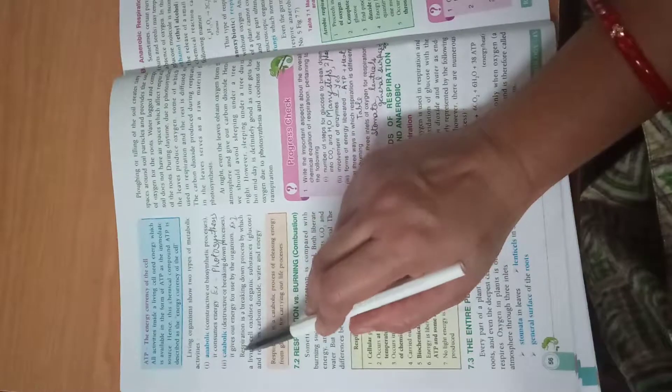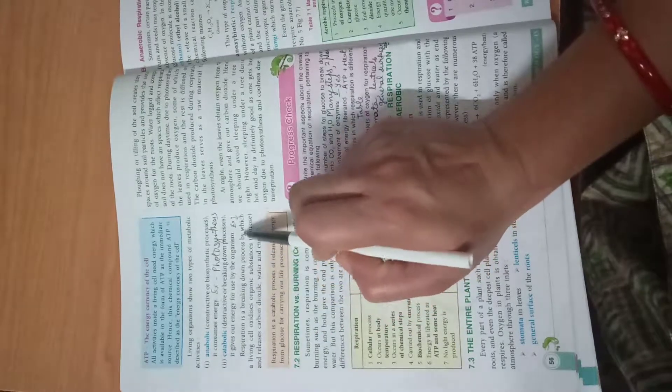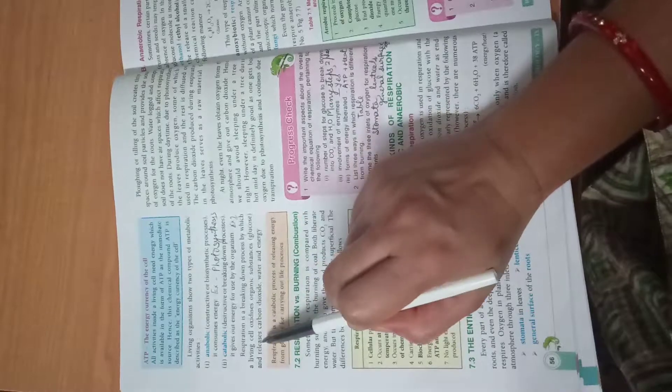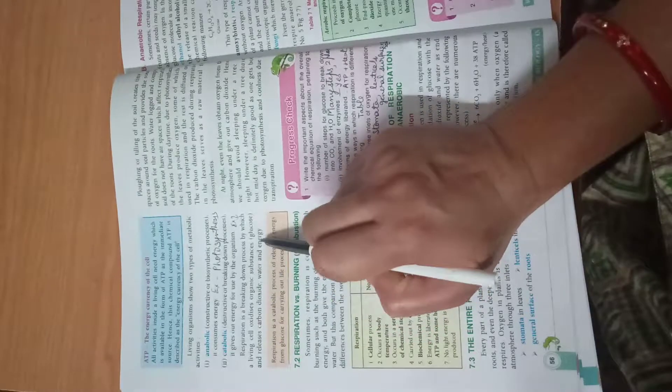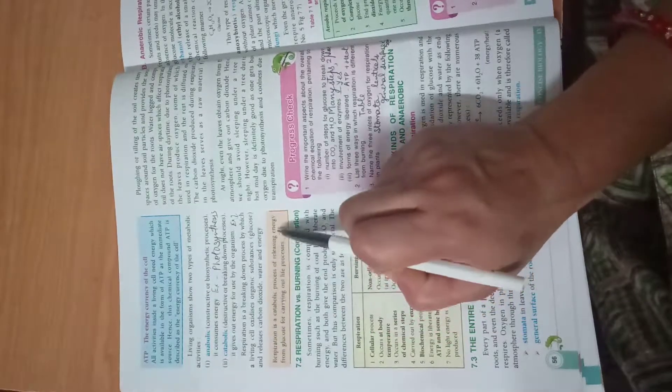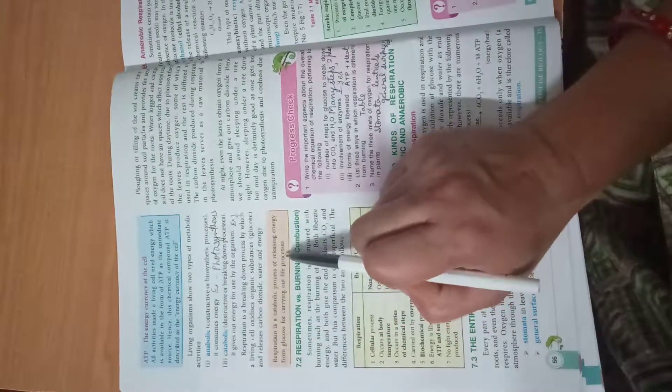Respiration is a breaking down process by which a living cell oxidizes organic substances and releases carbon dioxide, water, and energy. This is the definition: catabolic process of releasing energy from glucose for carrying out life processes.